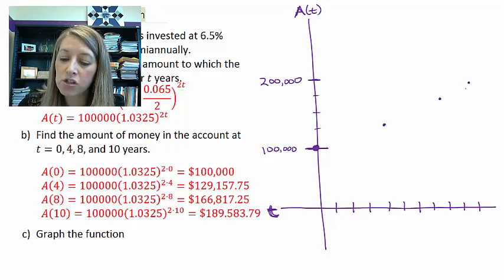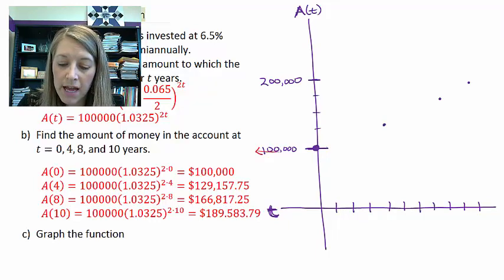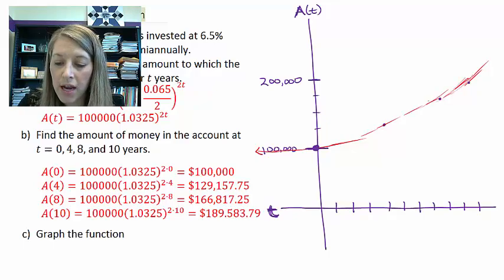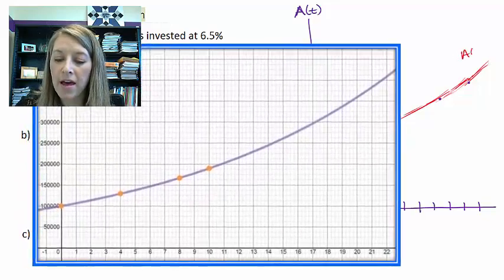And it might look like it's a straight line. But if I were to graph these very precisely, we should see that this is an exponential function, and we should see that it is increasing on an exponential basis. And so there is my graph of A of t.